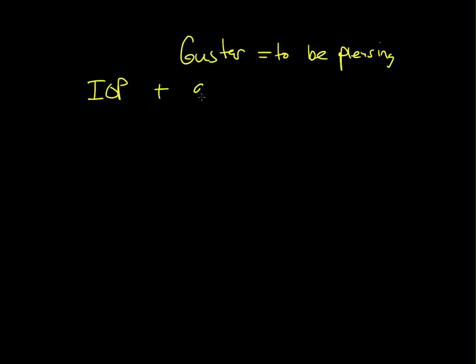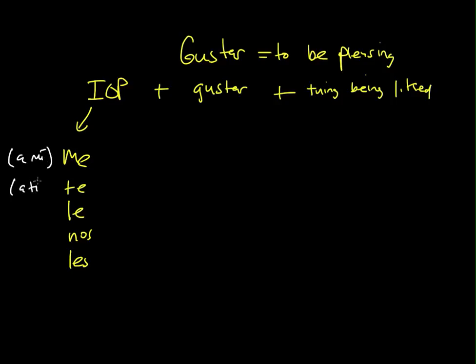plus a form of gustar plus a thing that is being liked. Now, our indirect object pronouns are me, te, le, nos, and les. For clarification or emphasis, we can say a mí, a ti, a